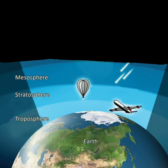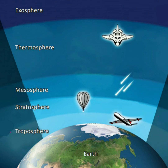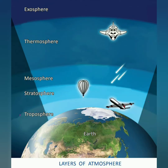Just above the mesosphere is the thermosphere, the fourth layer. Space shuttles orbit in this layer. The fifth and outermost layer is the exosphere. The air in this layer is very thin. So these are the five layers of the atmosphere.